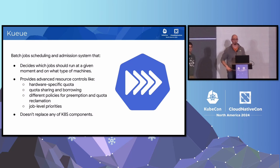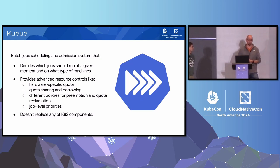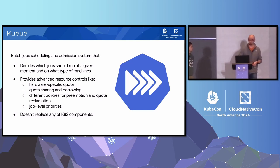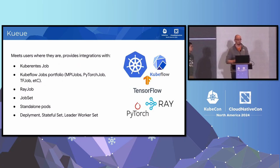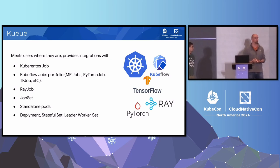Kueue is a batch scheduling and admission system that decides which jobs run at a given moment and on which machines. It provides advanced resource controls like hardware-specific quota - you can specify quota for a particular type of machine, for example separate quota for the newest GPUs and separate quotas for less fancy CPUs and GPUs. There is quota sharing and borrowing so teams can borrow unused quota from others. We have different policies for preemptions and quota reclamations, job-level priorities, and Kueue doesn't replace any Kubernetes component. It integrates with Kubernetes job, Kueue portfolio, Ray job, JobSet, standalone pods, pods grouped via annotation, deployment, stateful set, and very soon with leader worker set.